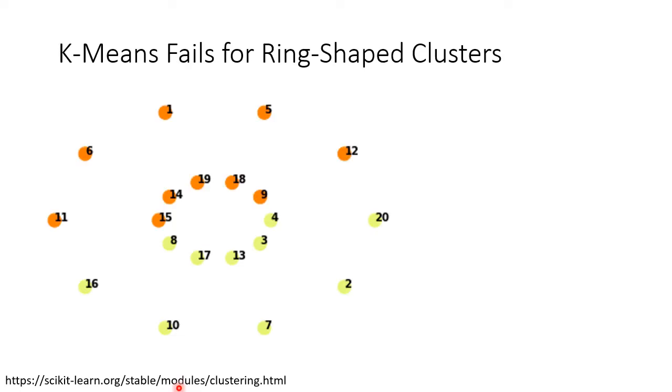Let's examine the TOEI dataset, which consists of two ring-shaped clusters, with 10 points in each group. As you can see, for such dataset, K-means fails to deliver the correct clusters.